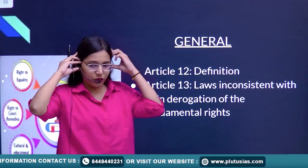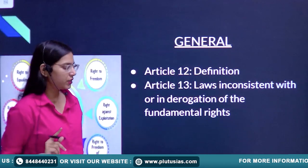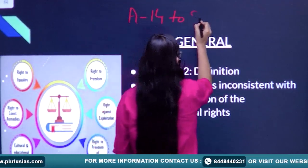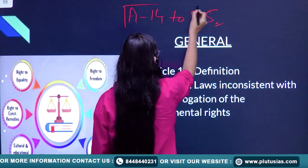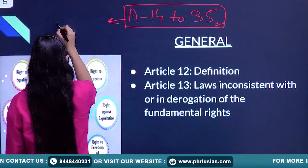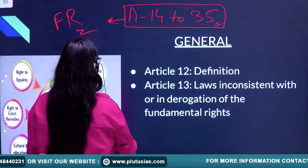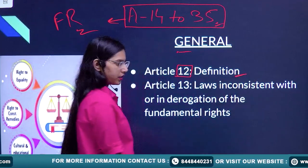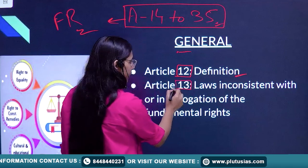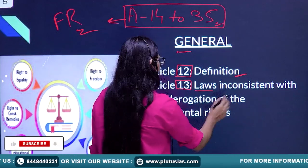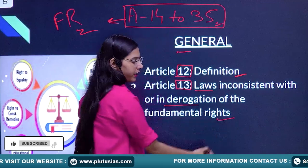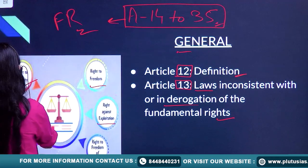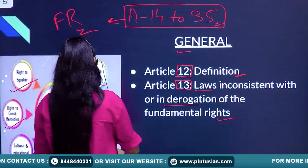Fundamental rights articles are mainly from Article 14 to 35. We have to remember all these articles. In general, Article 12 is the definition part, and Article 13 involves laws inconsistent with or in derogation of fundamental rights. The categories include right to equality, right to freedom, right against exploitation, right to constitutional remedies, cultural and educational rights, and right to freedom of religion.